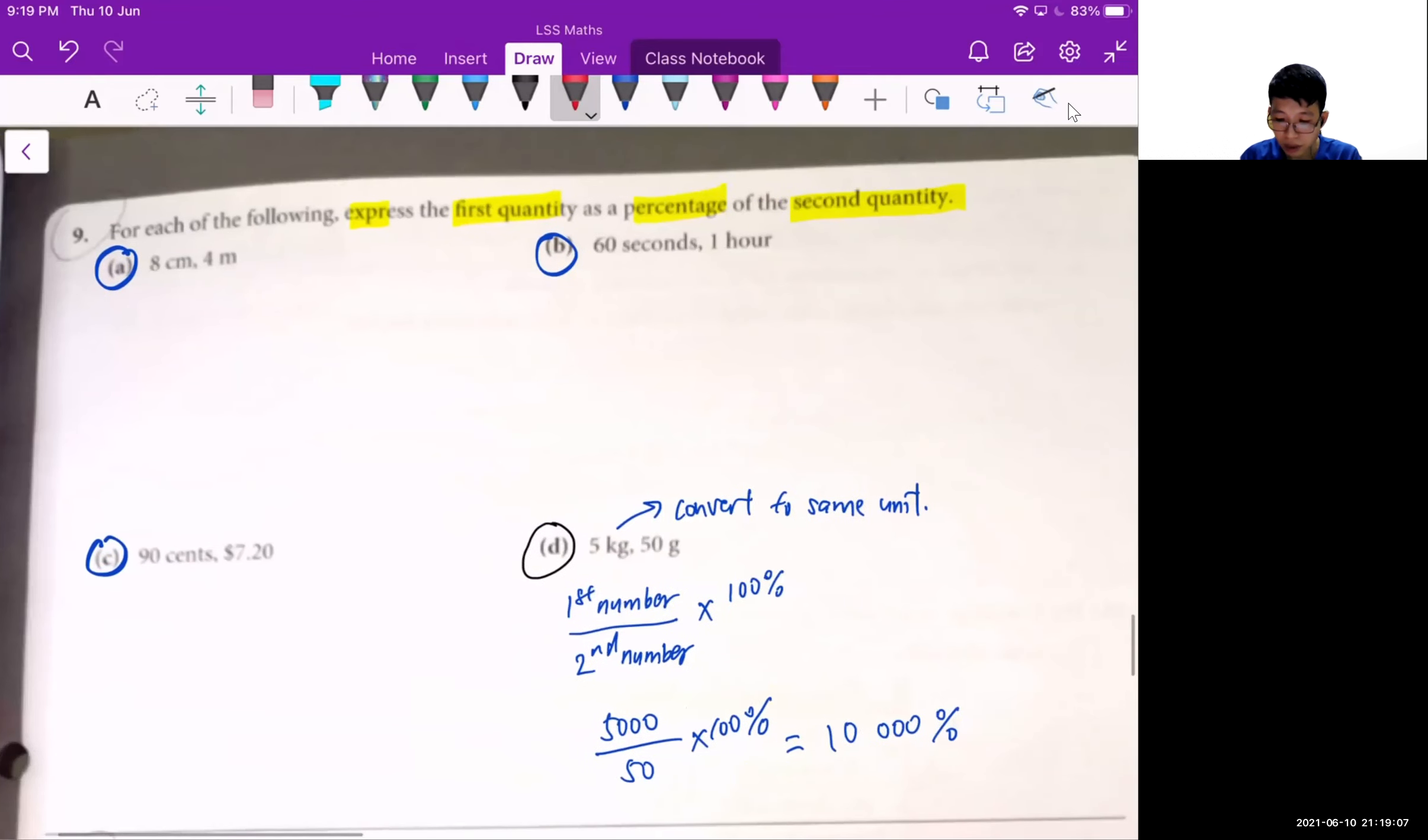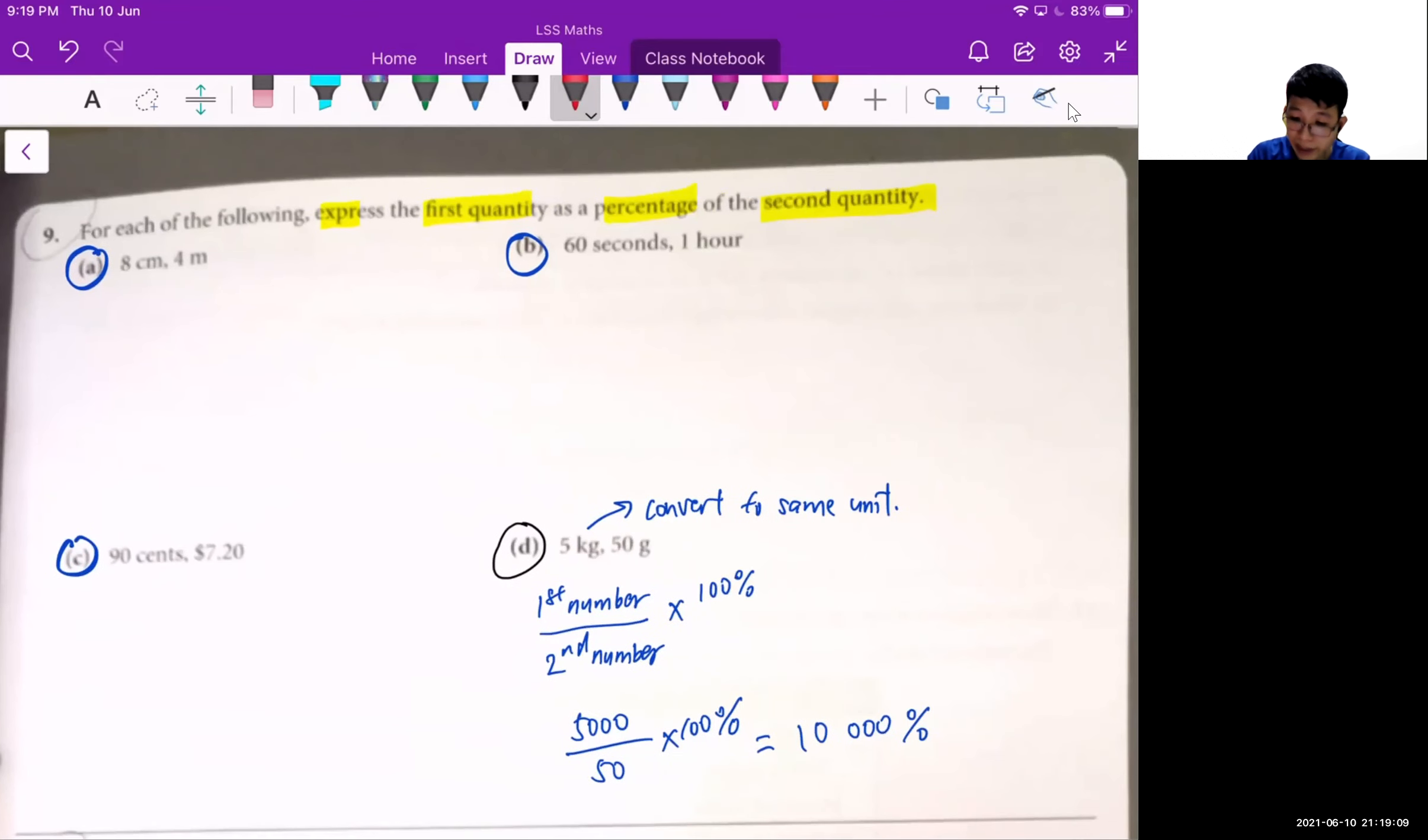Okay, so for question 9, what does it mean to express the first quantity as a percentage of the second quantity? That means you're using the first value as the numerator, that means the number at the top of the fraction, and the bottom value as the denominator, that means the bottom value of the fractions. So first thing, I noticed that their units are not the same. So I have to convert them to the same unit.